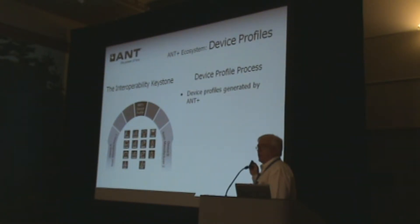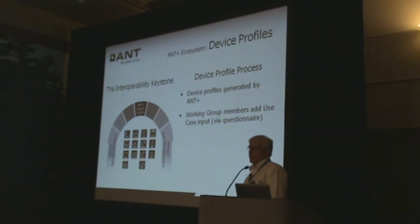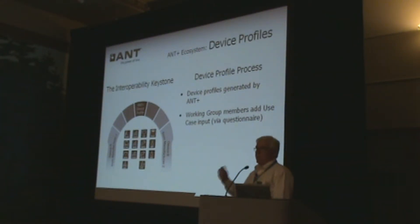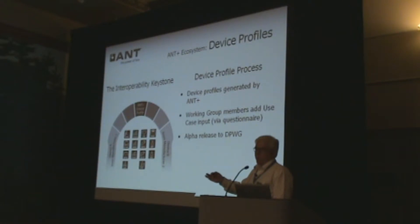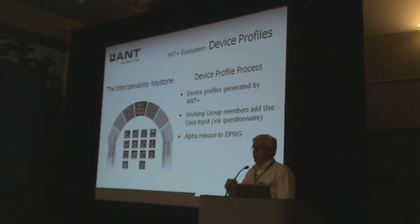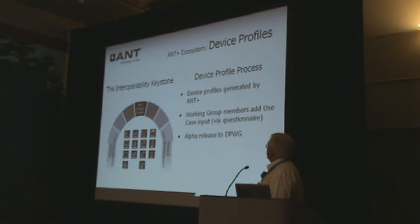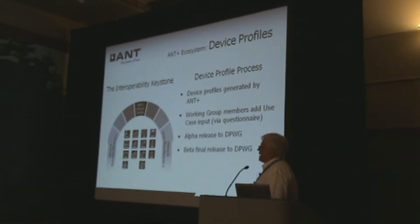We develop the profiles, generate them, and ask for help through working groups. We have a couple of new profiles where we get feedback from people that use that type of product — they fill out a questionnaire, we gather that data, then release an alpha to the device profile working group. We're benevolent dictators, so we get everybody's input, mass it up as best we think, use our vision and experience, and send back an alpha release which gives everybody a chance to review. Once it becomes the right thing, we send a beta release out to the working group.